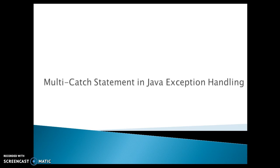In this video we'll talk about the multi-catch statement in Java exception handling. When handling more than one type of exception without multi-catch — that is, before Java 7 — if two or more exceptions were handled in the same way, we still had to write separate catch blocks for each of them.